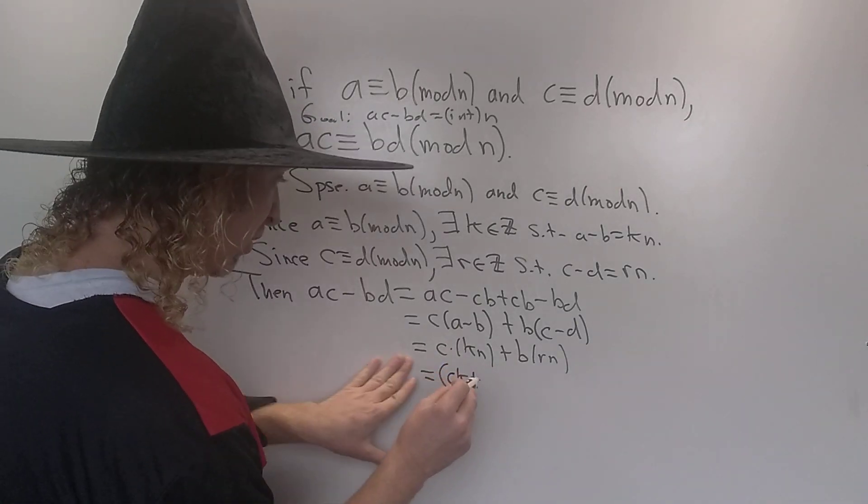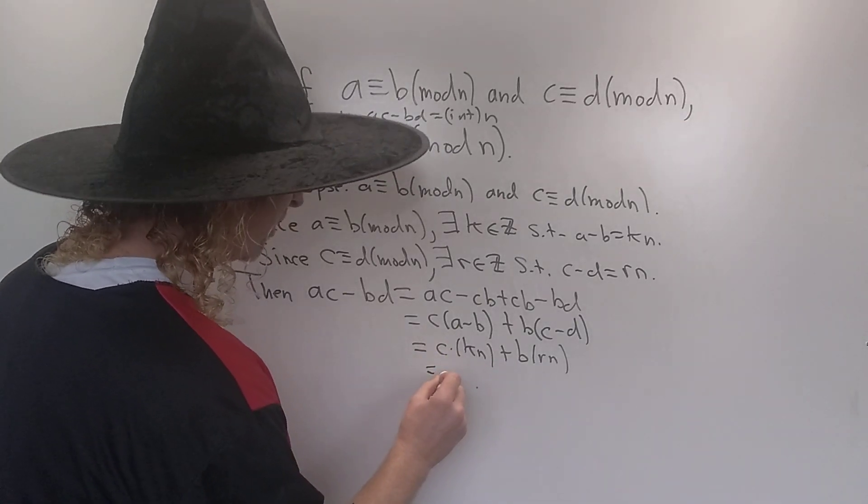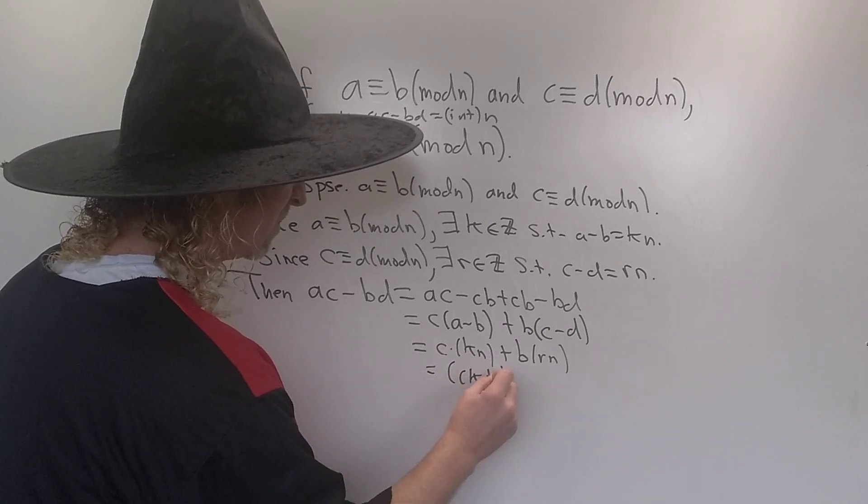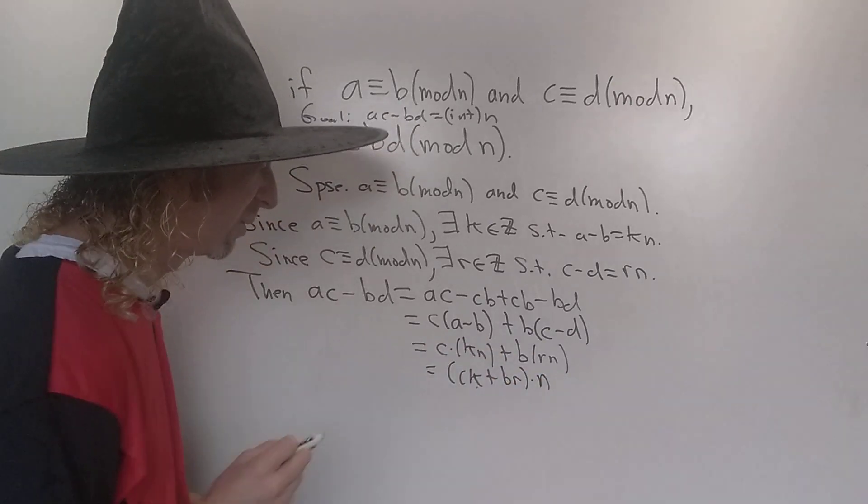So, no, we're pulling out the N. Yeah, pulling out the N. So this is CK plus BR times N. Yeah, it looks okay.